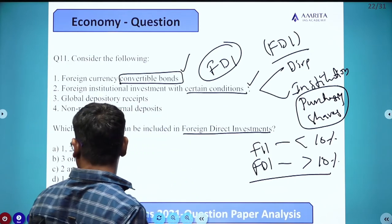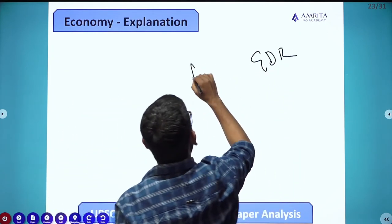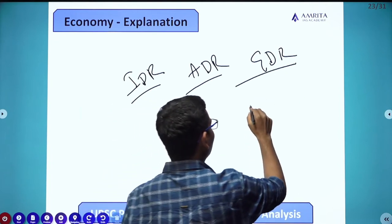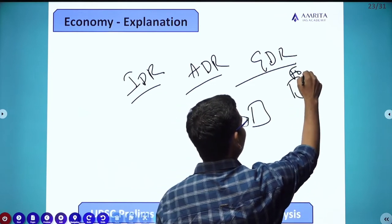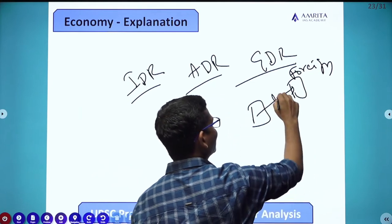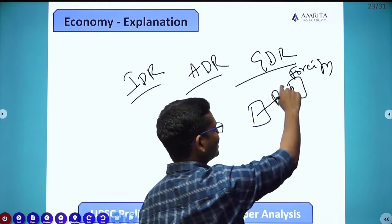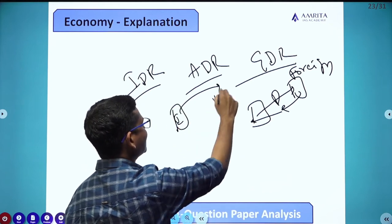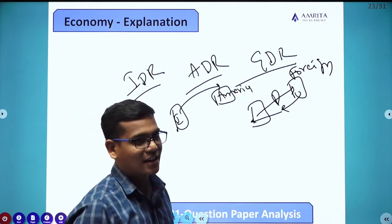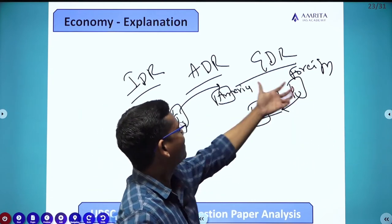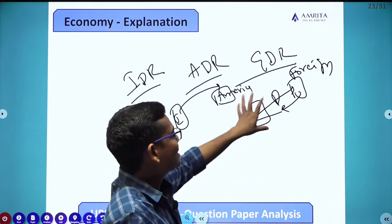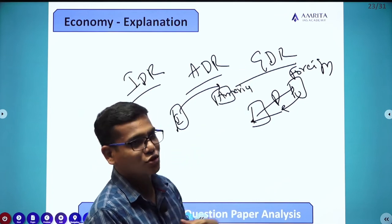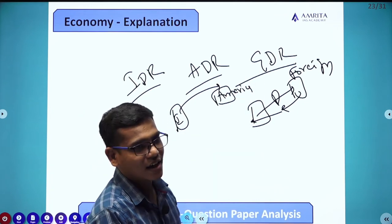Global Depository Receipts — you may be aware of GDR, ADR, and IDR (Indian, American, Global Depository Receipts). If an Indian company wants to raise money in a foreign country in foreign currency, they issue these depositories. Foreigners purchase those depositories, pay money, and that capital comes to India. For example, an Indian company issues depositories in America, so American citizens invest in Indian companies using American currency. This is bringing capital in a different instrumental form, so it is also foreign equity — not through normal IPO or merchant banker operations.